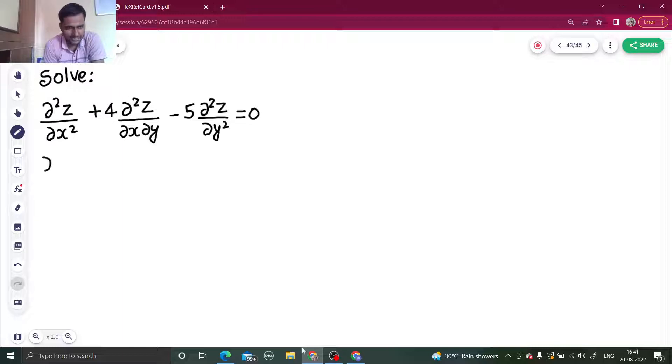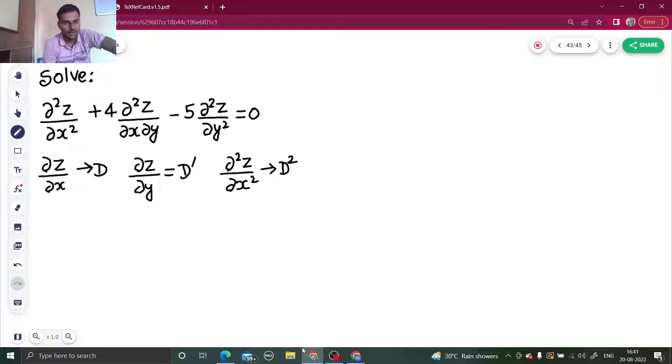Whenever you see ∂z/∂x, you replace that by capital D. Whenever you see ∂z/∂y, you replace that by D dash. And whenever you see ∂²z/∂x², you replace that by D², and same is true for ∂²z/∂y², you replace that by D dash square. So we can write this as D² + 4DD' - 5D'² operating on z equals 0.